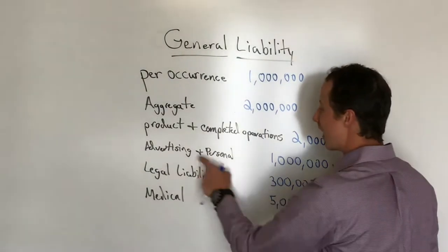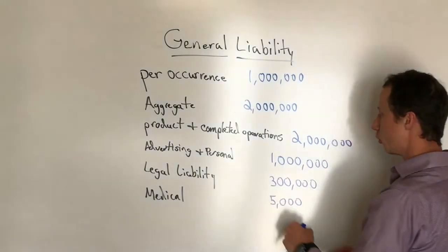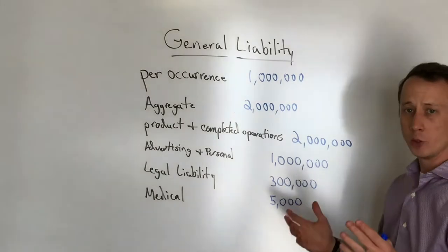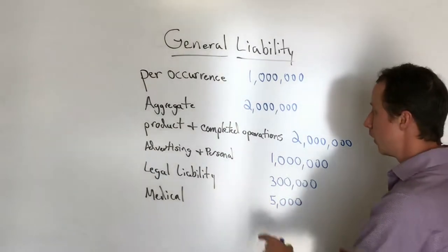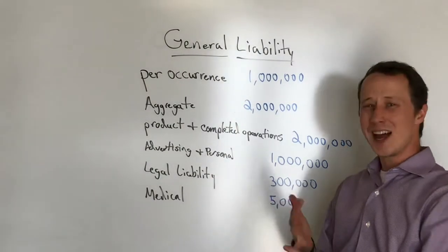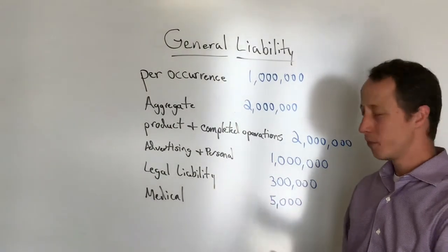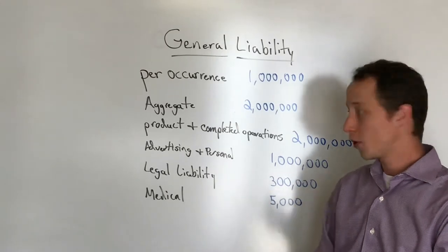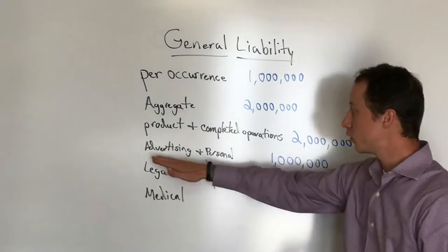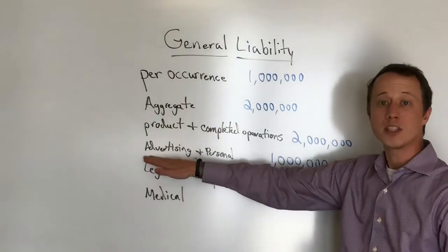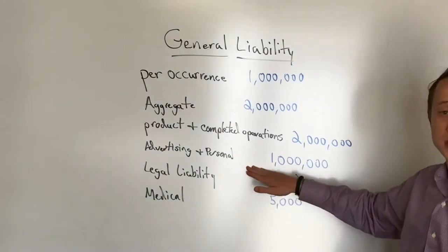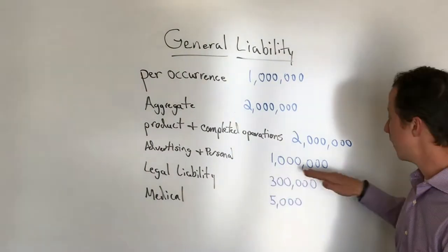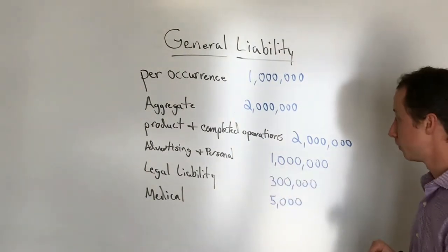Next, advertising and personal injury. The limit should be a million dollars. This covers anything in libel, slander, defamation — copyright infringements can play into it as well — based off of your advertising. It gives you a set limit for that. I recommend seeing that at least at a million dollars.